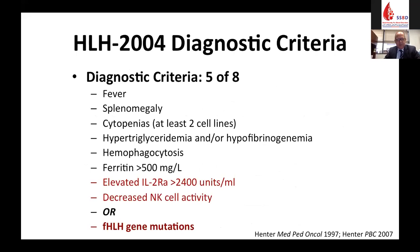The HLH 2004 diagnostic criteria are inclusion criteria for a clinical trial, but are used as de facto diagnostic criteria for disease — though not prospectively validated. The criteria include fever, splenomegaly, cytopenias, increased triglycerides, decreased fibrinogen, hemophagocytosis, and a ferritin of 500 (which is arguably too low). More exotic labs include IL-2 receptor and NK cell activity, or identified gene mutations.